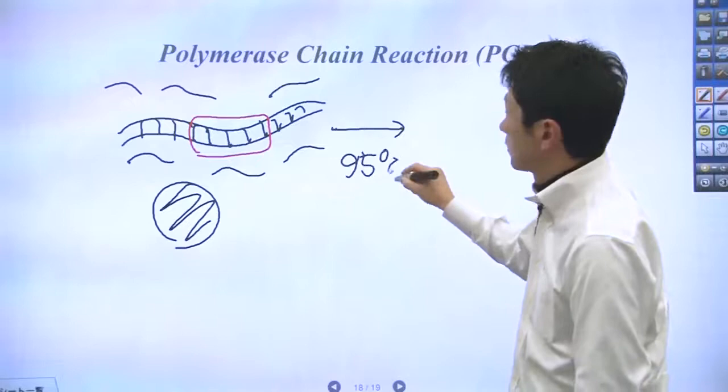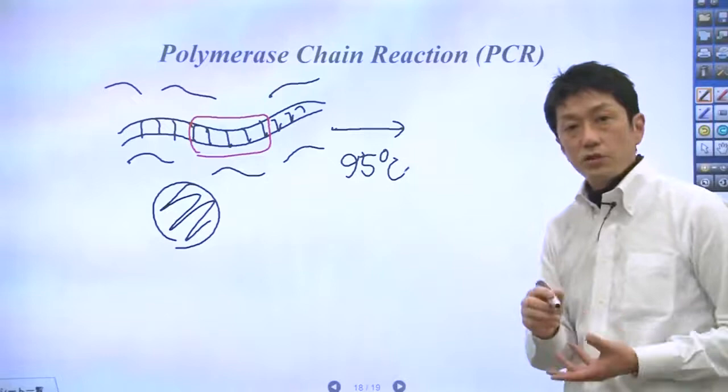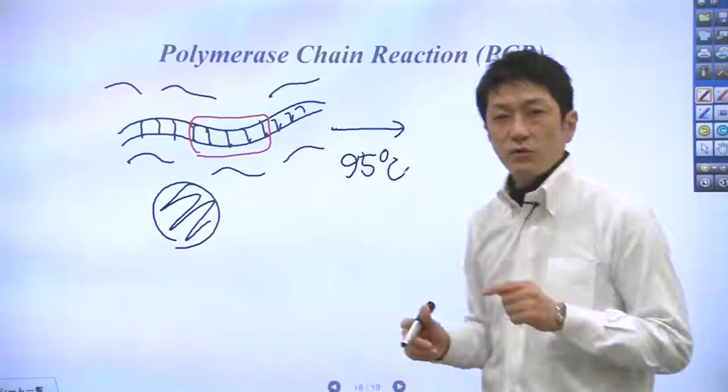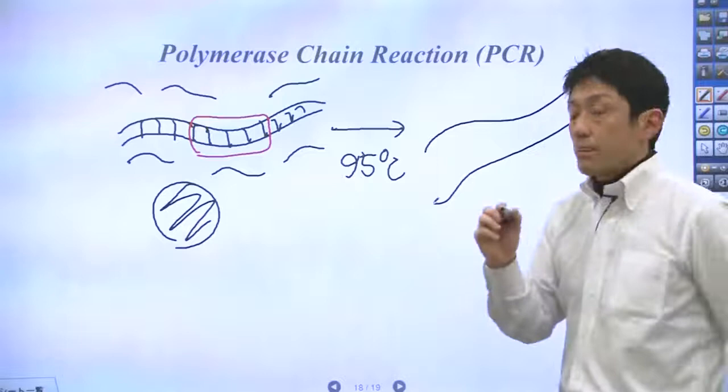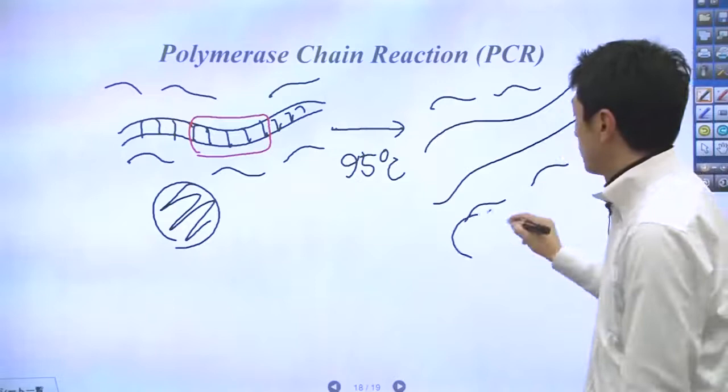As I mentioned earlier, DNA pairs are maintained by hydrogen bonds. Because hydrogen bonds dissociate at high temperatures, double-stranded DNA in the sample dissociates into single-stranded DNAs. Like this. Then you have primers, synthetic primers there, and polymerase here.